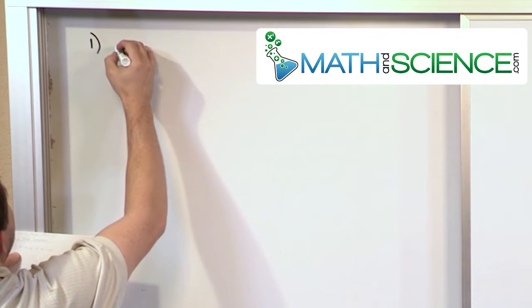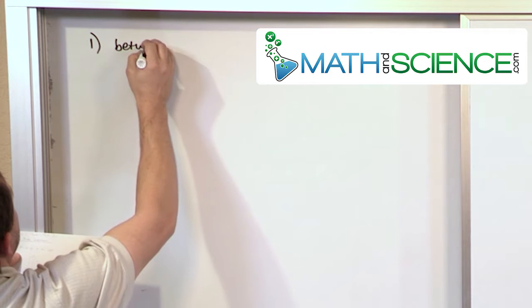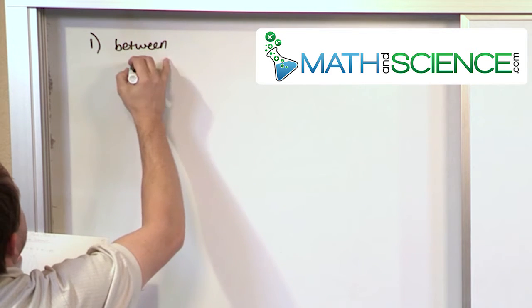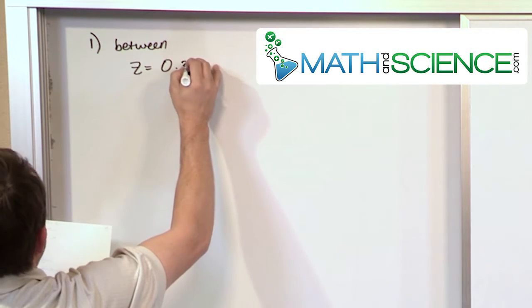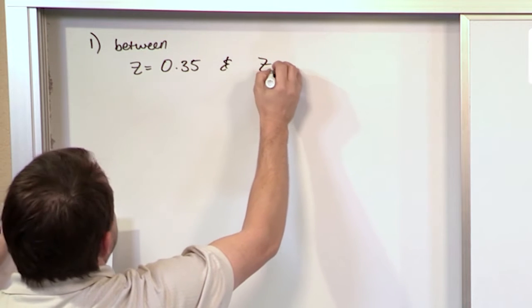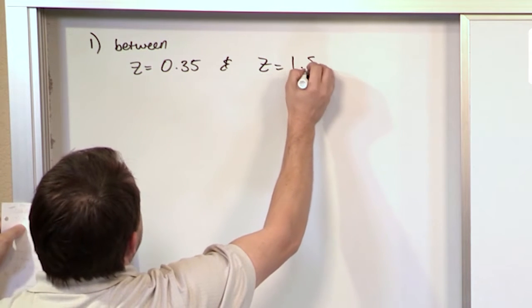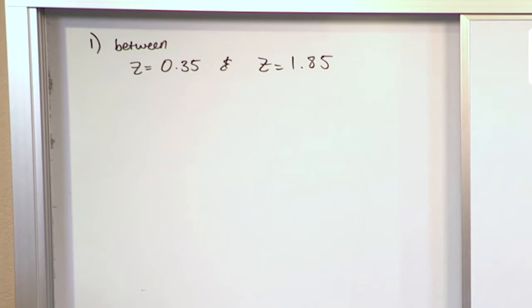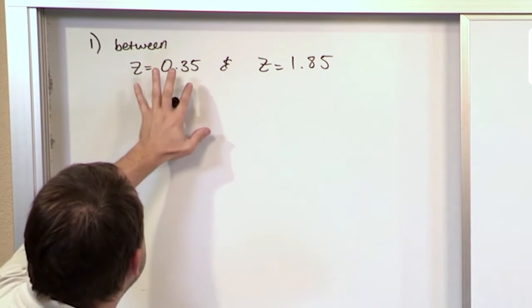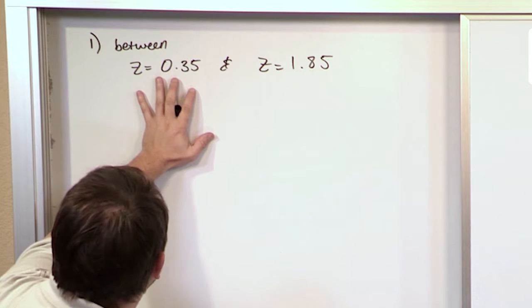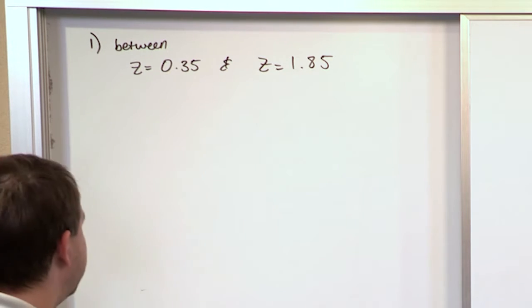You might have a problem where you want to find the area between z = 0.35 and z = 1.85. You want to find the probability of some event happening, and it ends up being that you want to find the area under the curve between this value of z and this value of z.